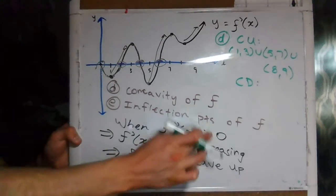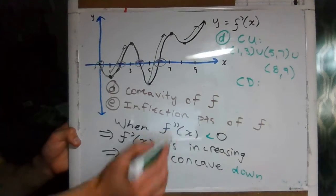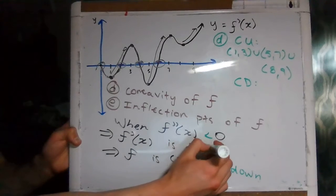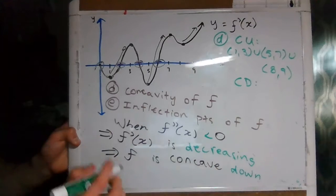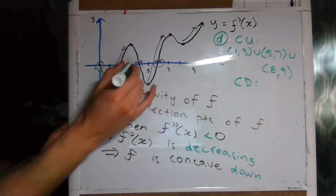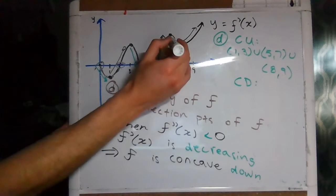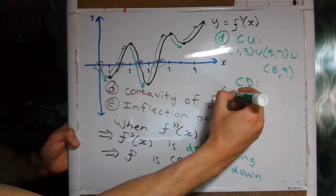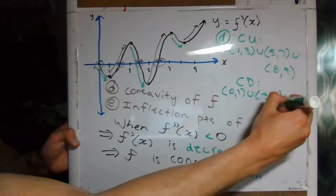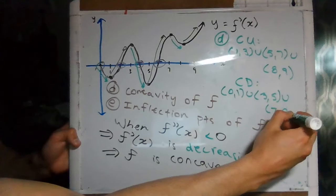Now where is f concave down? It's the opposite logic: we look at where the second derivative is less than zero, which tells us when f is concave down, and whenever the second derivative is less than zero that's going to be when the first derivative is decreasing. So where is the first derivative decreasing? It's decreasing from 0 to 1, from 3 to 5, and from 7 to 8. So f is concave down over the interval 0 to 1, union 3 to 5, union 7 to 8.